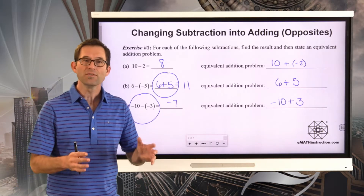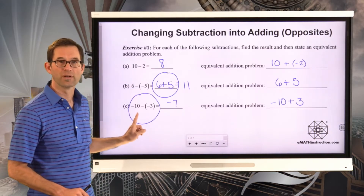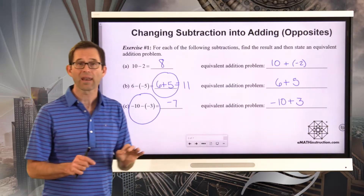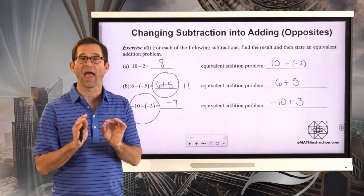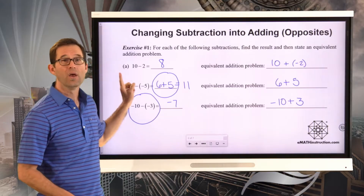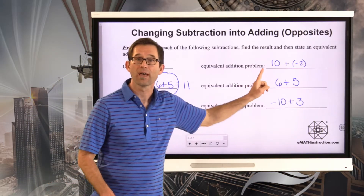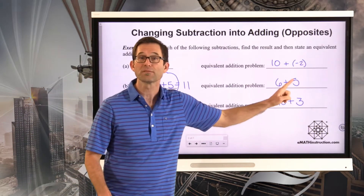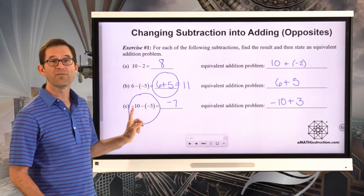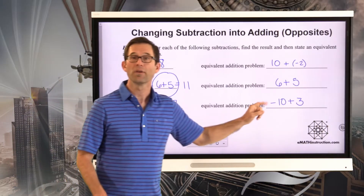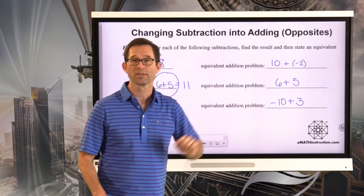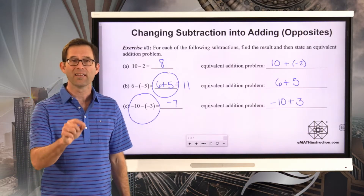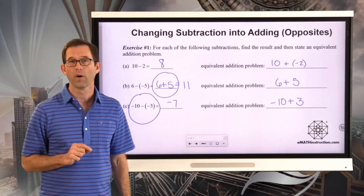That's equivalent to negative 10 plus positive 3. In each of these cases, when I change that subtraction into an addition, what I end up adding is the opposite or the additive inverse of the number I was subtracting. So 10 minus 2 becomes 10 plus negative 2; 6 minus negative 5 becomes 6 plus positive 5; negative 10 minus negative 3 becomes negative 10 plus positive 3. We can always change subtraction into the addition of the opposite of what we were trying to subtract.